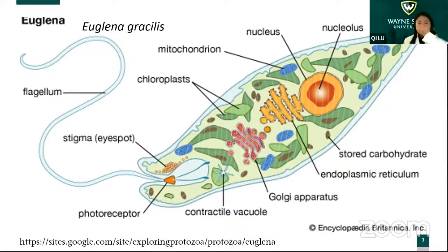The cyclic AMP concentration is functional, acting like a second messenger that changes cell mobility and the motion of the flagellum.